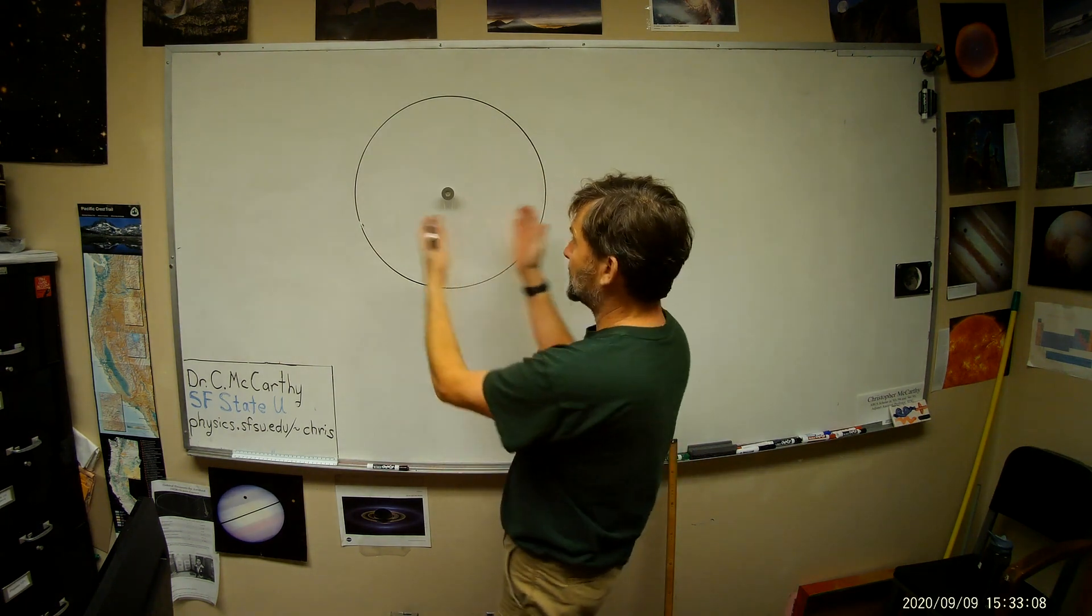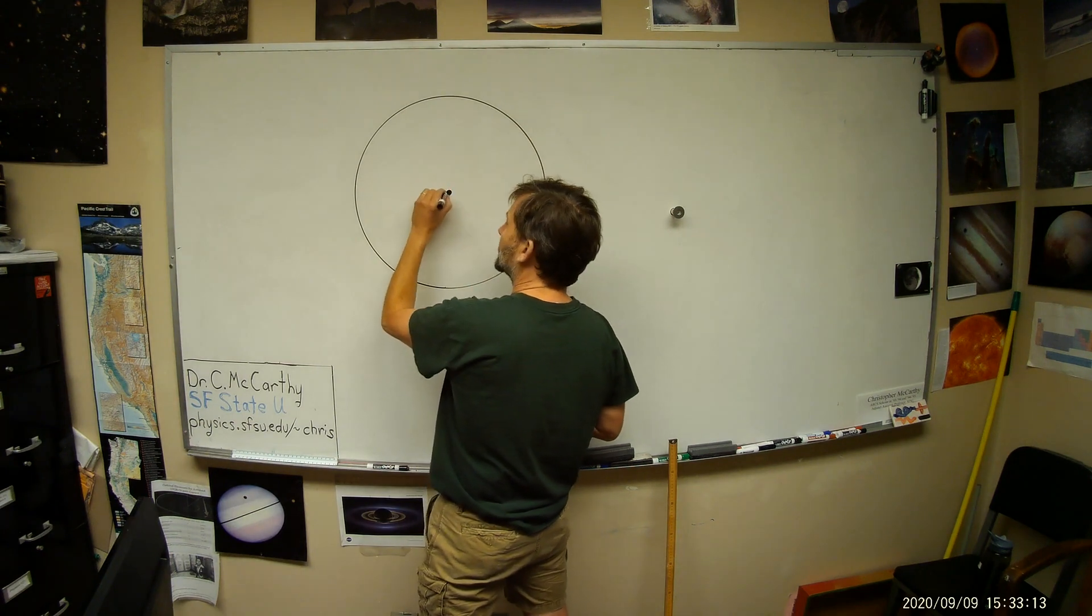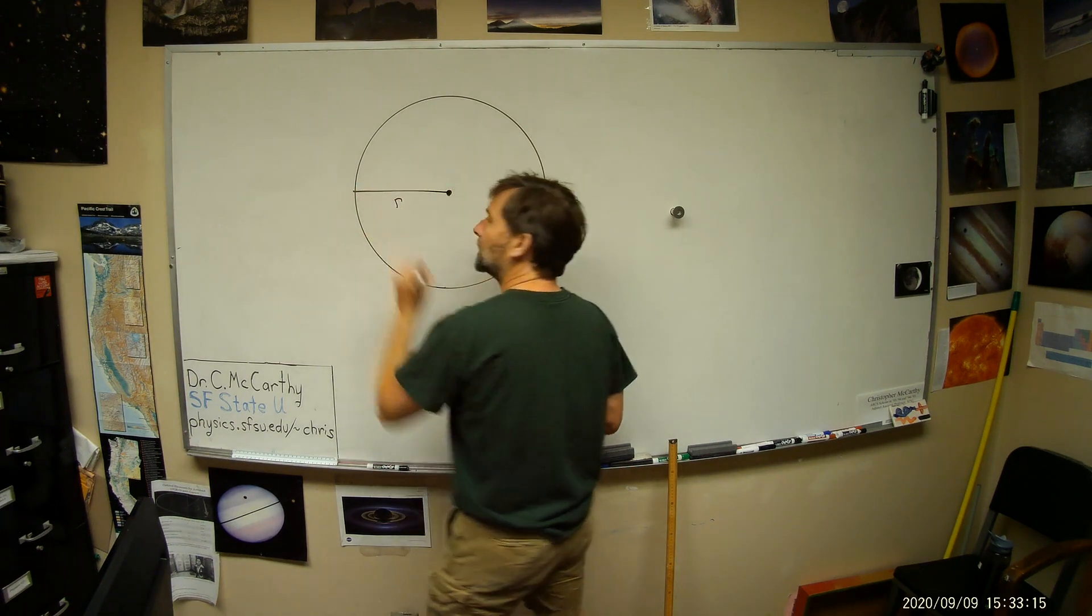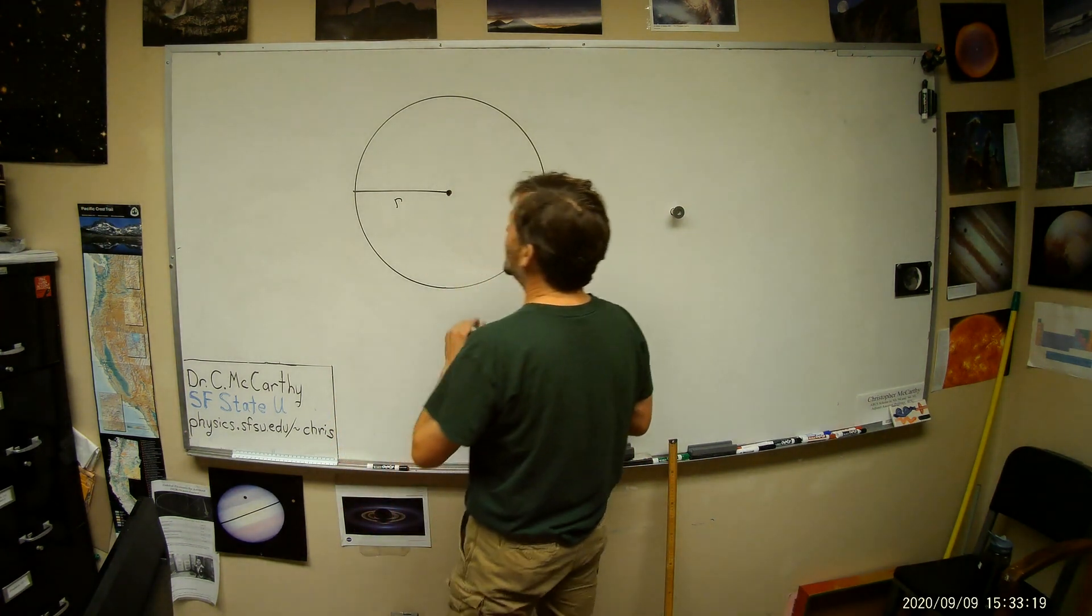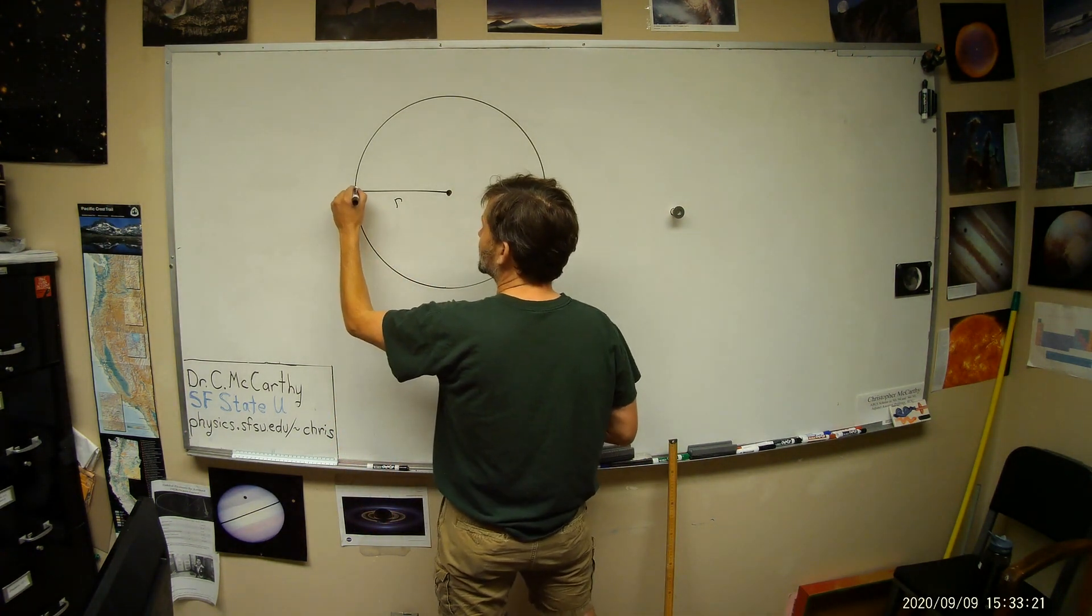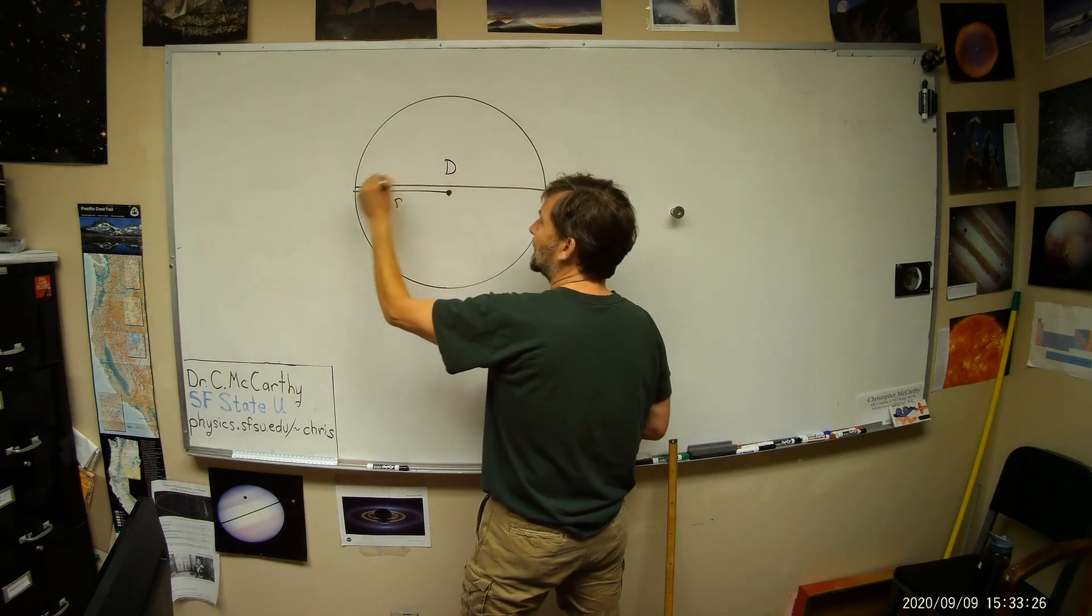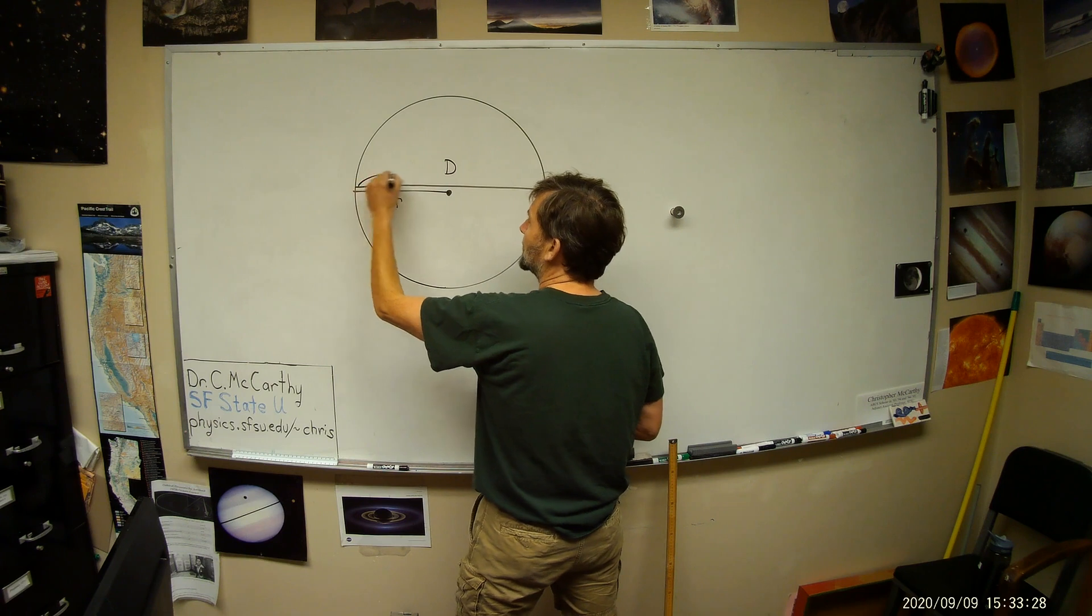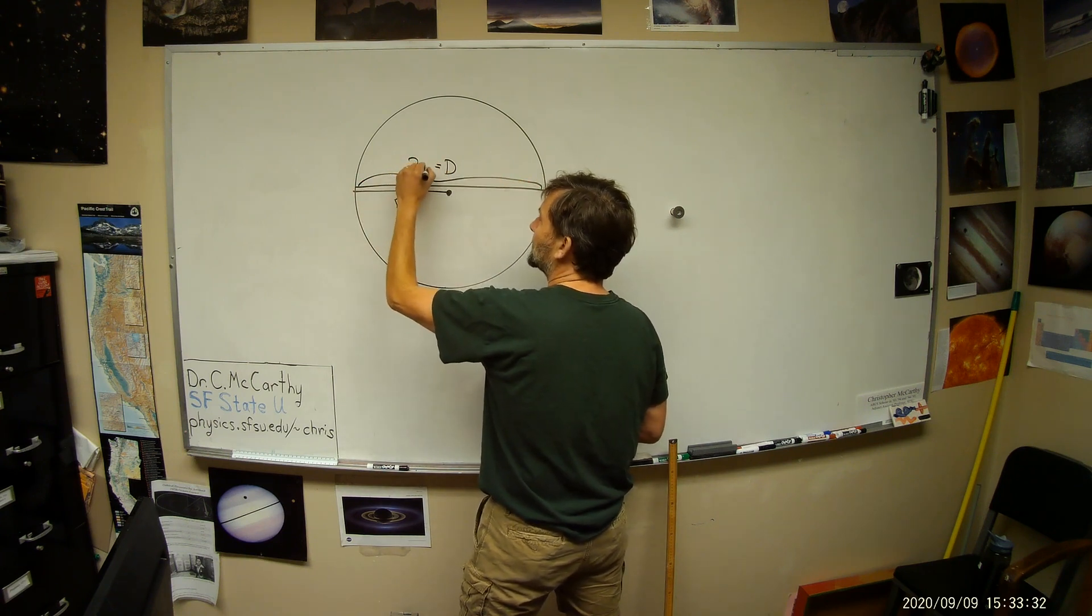And if you were to measure the size of this circle, you could talk about the radius. That would be a good way to figure out the size of a circle. Or you could talk about the diameter, which is twice the radius. This diameter, we call it D, is twice the radius. That's D equals 2 times the radius.